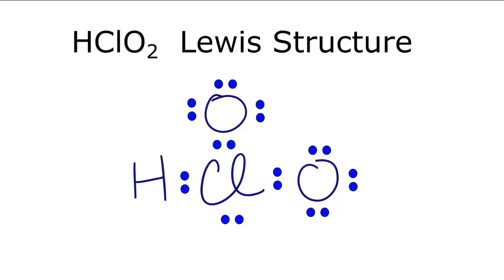The problem is if we calculate our formal charges, we'll see that it's probably not the most favorable or likely Lewis structure for HClO2. In fact, if we calculate the formal charges, we'll see that this oxygen here is a negative one, as does this, and the formal charge on the Cl is a plus two. We want our formal charges to be closer to zero. That tells us that that's a more likely or favorable molecule.